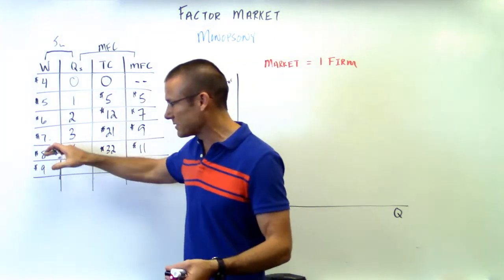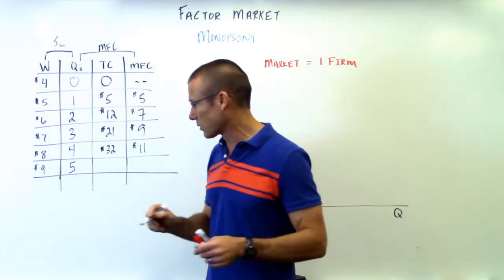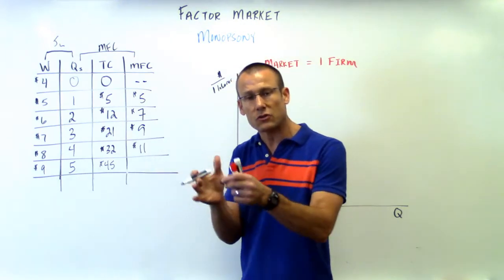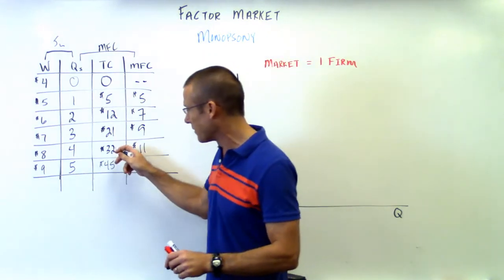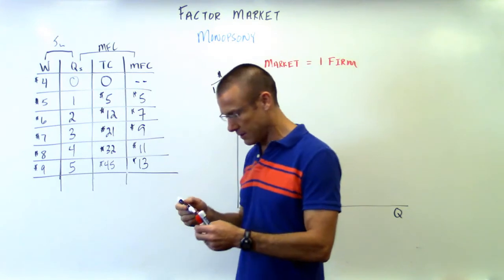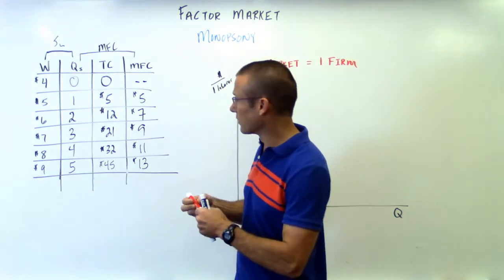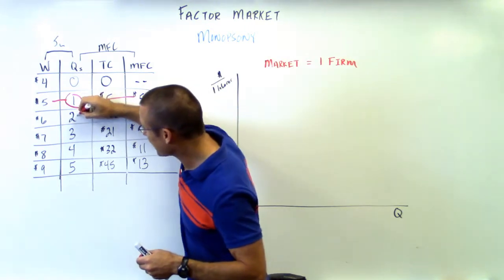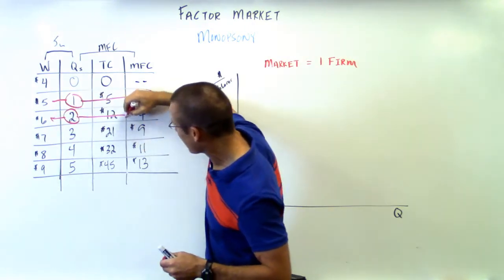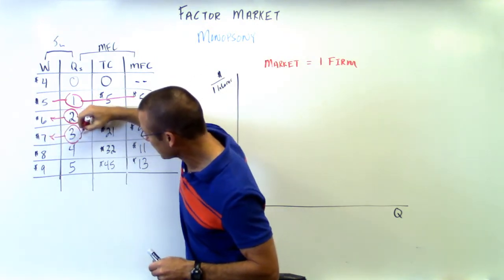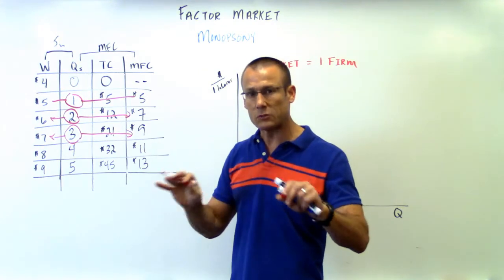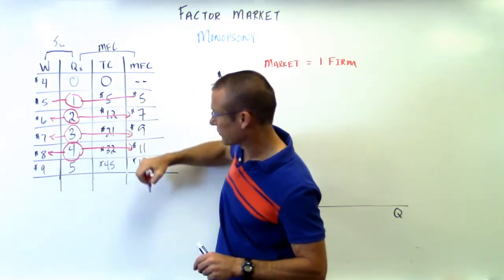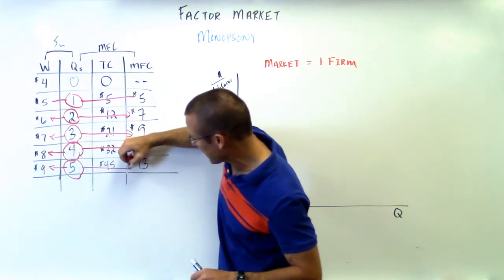One more to do: we raise the wage to nine dollars and get five workers. Nine times five is forty-five. The additional factor cost from thirty-two to forty-five is thirteen. Let's highlight what we see: at a quantity of one, wage and MFC are both five — same place. At a quantity of two, wage is six but MFC is seven. Quantity of three: wage seven, MFC nine. Quantity of four: wage eight, MFC eleven. Quantity of five: wage nine, MFC thirteen. They've totally split away — the MFC is above the supply curve.